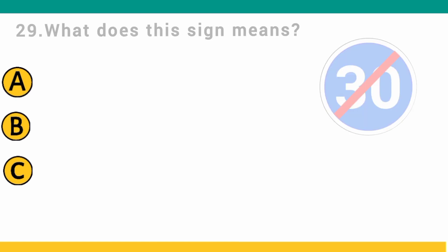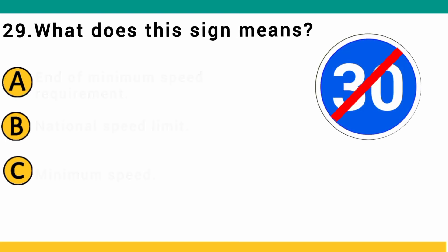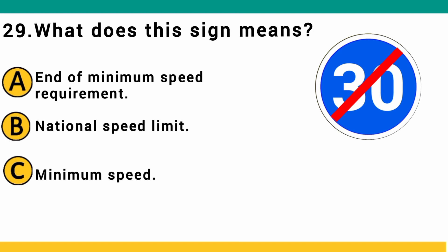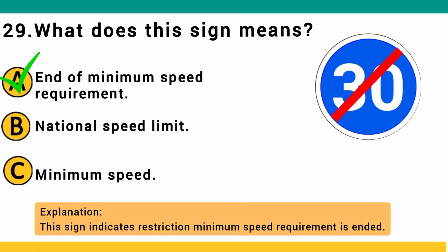What does this sign mean? A) end of minimum speed requirement, B) national speed limit, or C) minimum speed. The correct answer is A: end of minimum speed requirement. This sign indicates the point at which the minimum speed requirement ends.